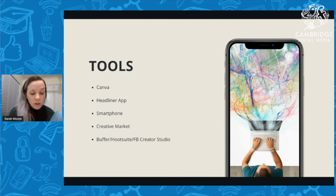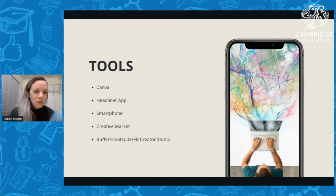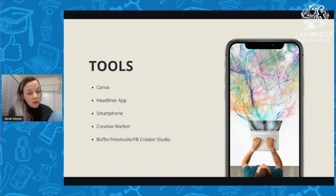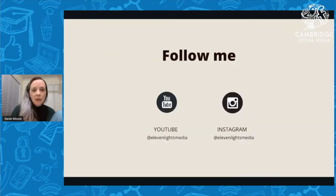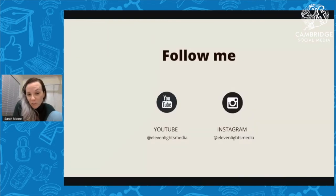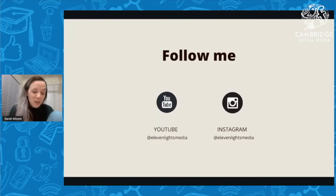I've also listed Creative Market — if you're struggling with micro content ideas for Instagram or any platform, go to Creative Market, spend 30 dollars, get a whole bunch of ideas, and use those as your template. Canva also has a ton of free templates. For scheduling tools: Buffer, Hootsuite, or Facebook Creator Studio is free and will schedule to both Instagram and Facebook. That's really a great place to start. You can find me mostly on YouTube — I've got tons of tutorials there — and on Instagram, where I'm on stories every day and pretty much post daily, and it's the best place to connect with me directly.